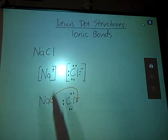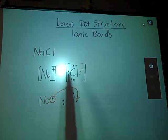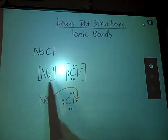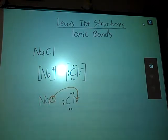The ionic bond is nothing more than the electrostatic attraction that happens between the positive and the negative. So this is the Lewis dot structure for sodium chloride.